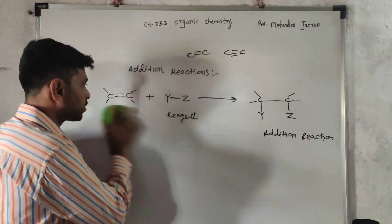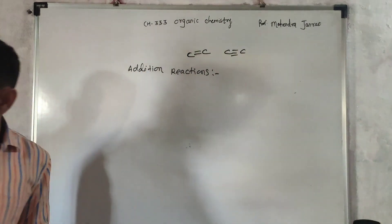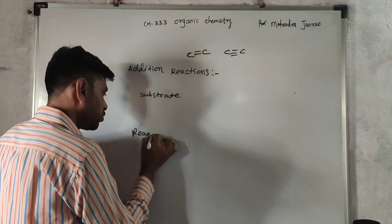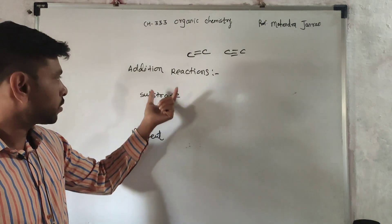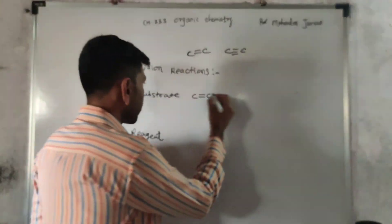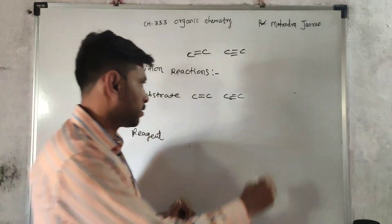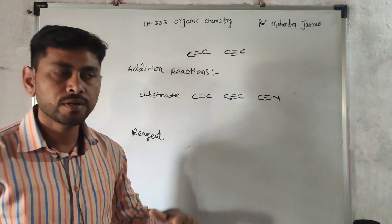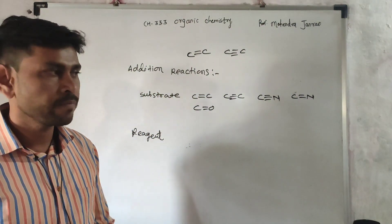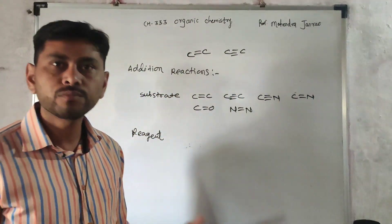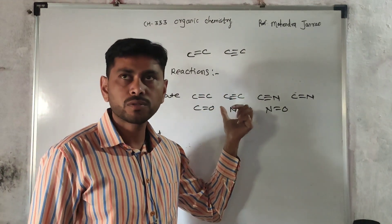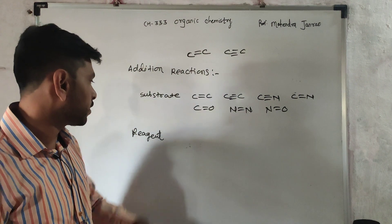In the addition reaction we saw two components: the substrate and the reagent. These two components form the addition product. The substrate that undergoes addition reaction is an unsaturated system — carbon-carbon double bond or carbon-carbon triple bond. These are the compounds which have unsaturation in them and undergo addition reactions.